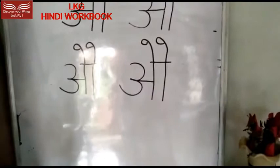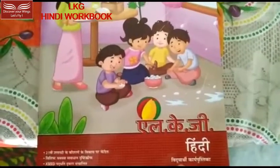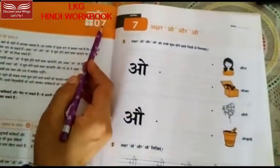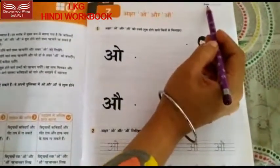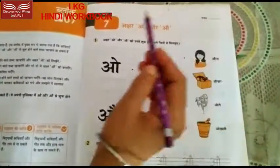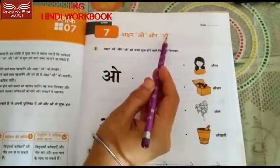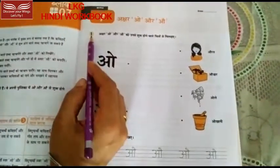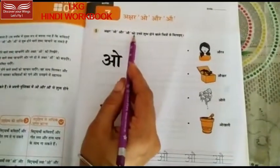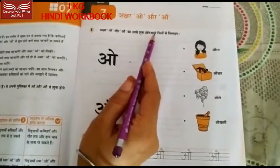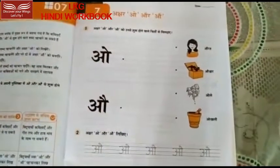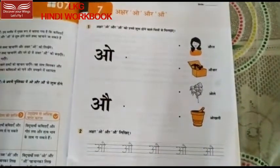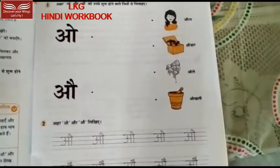अब है हमारी कारपुस्तक की बारी। हिंदी कारपुस्तक, ब्लॉक 7, पेज नंबर 15। सबसे पहले हम दिनांक भरेंगे यहाँ पर। अक्षर ओ और औ - हमारा पहला प्रश्न है कि अक्षर ओ और औ को उनसे शुरू होने वाले चित्रों से मिलाइए। हमको ओ और औ से शुरू होने वाले शब्दों की जो चित्र हैं उनसे मिलाना है।